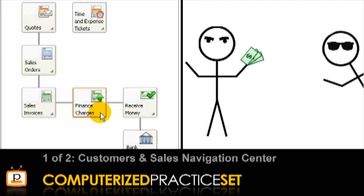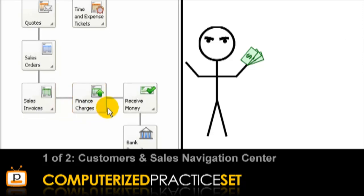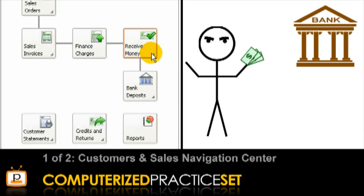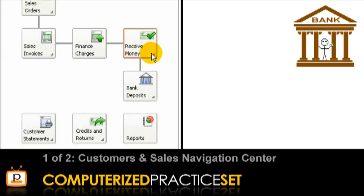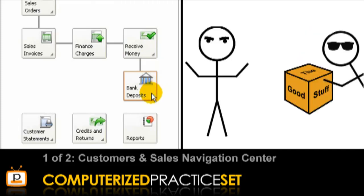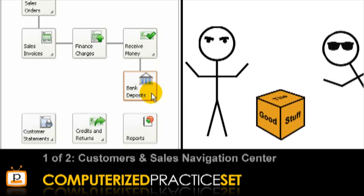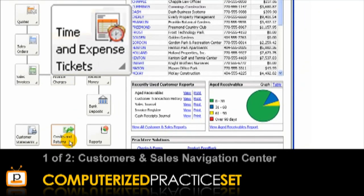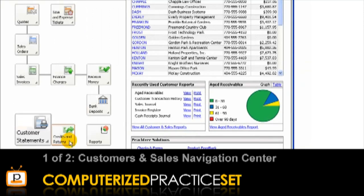When Joe finally pays Chris for the boxes of the good stuff, Chris needs to record the receipt of cash using the Receive Money icon in Peachtree. Next, Chris needs to take the cash and deposit it into the bank, recorded using the Bank Deposits icon. If Joe returns one box of the good stuff to Chris, Chris records a credit memo and any payment to Joe using the Credits and Returns icon. The final icons in the Customers and Sales Tasks section are Time and Expense Tickets, Customer Statements and the Reports icons, which we encourage you to explore for yourself in Peachtree.